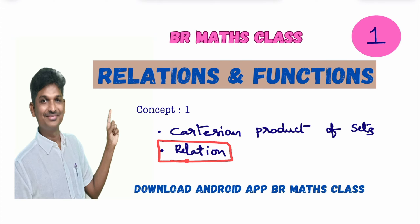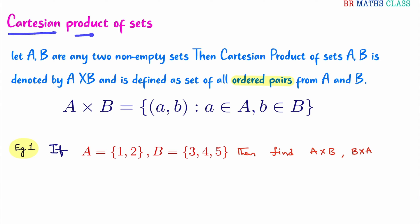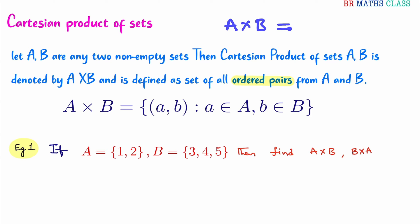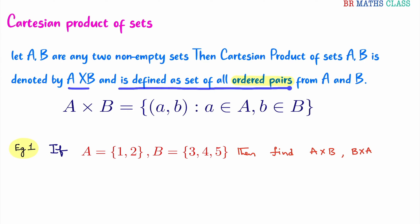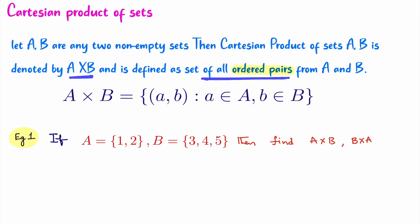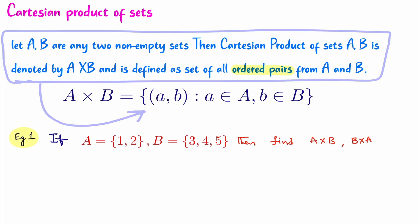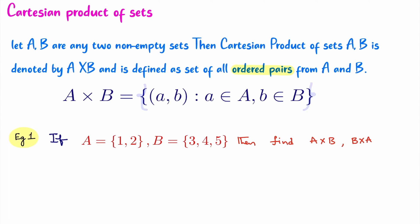Next we will learn what is a relation, examples to understand the relation, and two important note points. Cartesian product of sets — what is the definition? You take any two non-empty sets. Cartesian product of sets A and B is denoted by A cross B. This indicates the Cartesian product of sets A and B, and A cross B is defined as the set of all ordered pairs from A and B, where the first element is from the first set and the second element is from the second set.